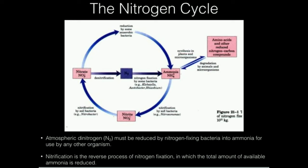Before we get into the bulk of amino acid biosynthesis, there are some things we really have to understand that don't occur in humans, but they're absolutely necessary for human function. What we're going to be talking about is the nitrogen cycle. We have this idea that we eat a steak and we get amino acids — that's pretty easy — but the amino acids are already made. Somebody had to put the nitrogen in a form where amino acids could be made.